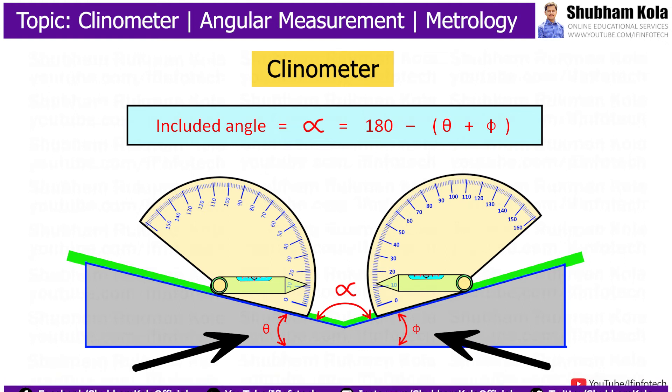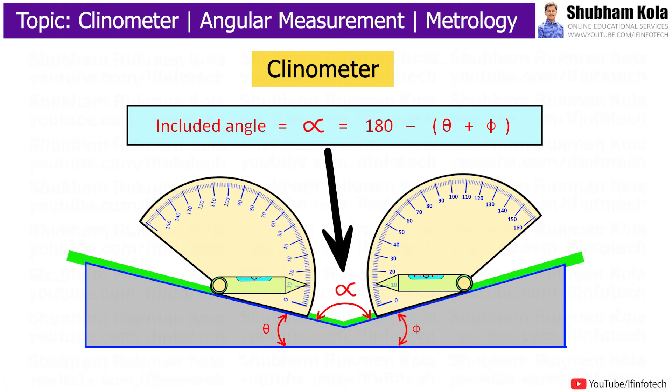If theta and phi are the readings of instrument, then the included angle between surfaces is obtained by formula. That is, included angle is equal to 180 minus theta plus phi.